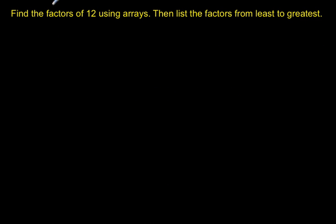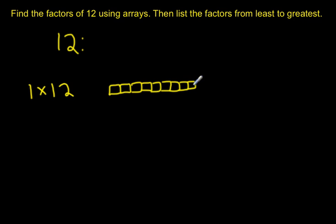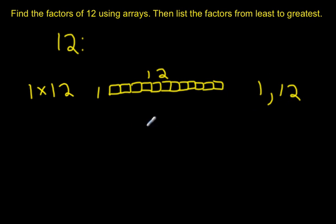The first example we're going to try is finding all the factors of the number 12. The first thing I'll want to do is ask myself: can I multiply 1 times any number to equal 12? Well, 1 times 12 equals 12. So with my arrays, I'm going to make 1 row of 12 blocks — 1, 2, 3, 4, 5, 6, 7, 8, 9, 10, 11, 12. So here I have 1 row of 12 tiles, and 1 and 12 are both factors of 12.